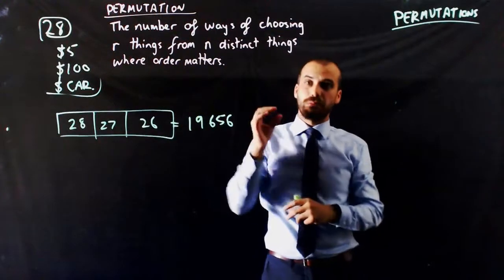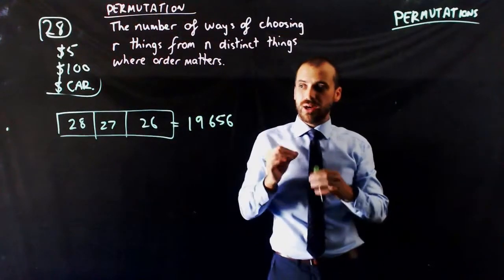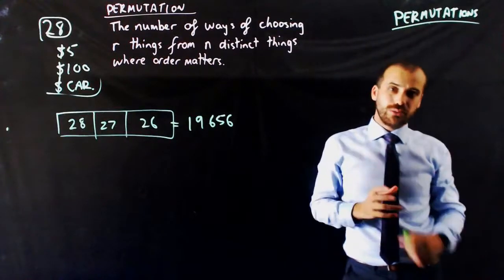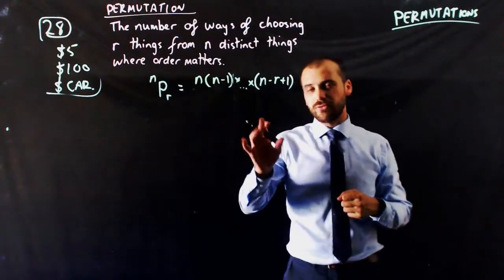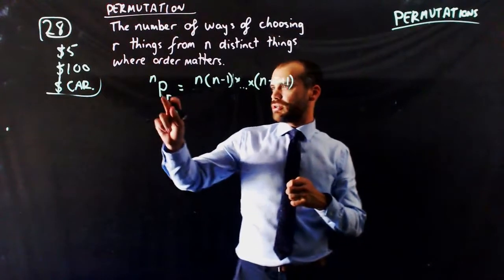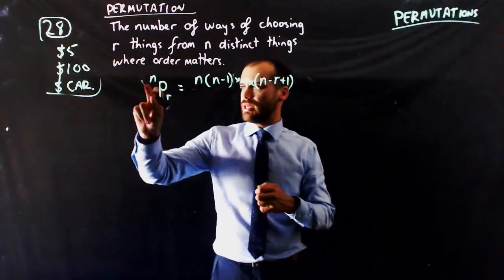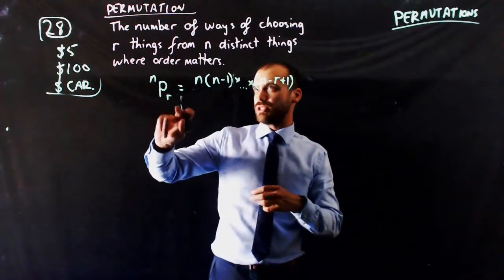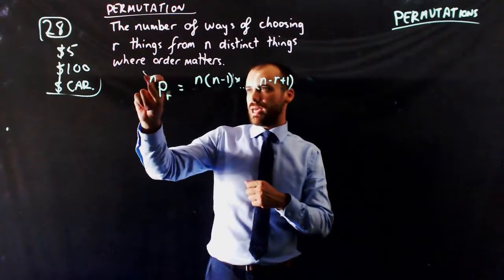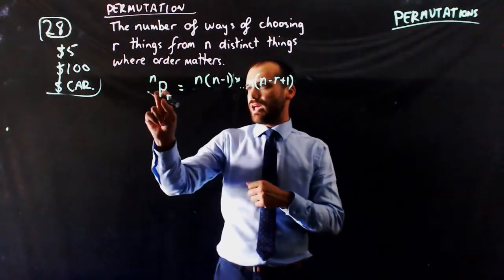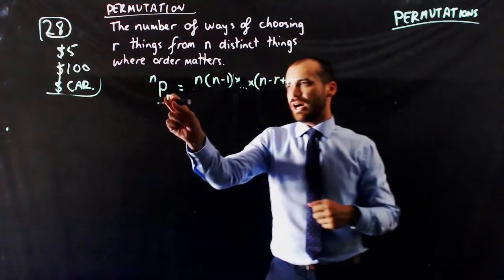There's our definition of what a permutation is. Now we can add a little formula to go with it. That's not the formula, but it's close. What it says is nPr, which is from n distinct things, find out how many different ways you can choose r things.